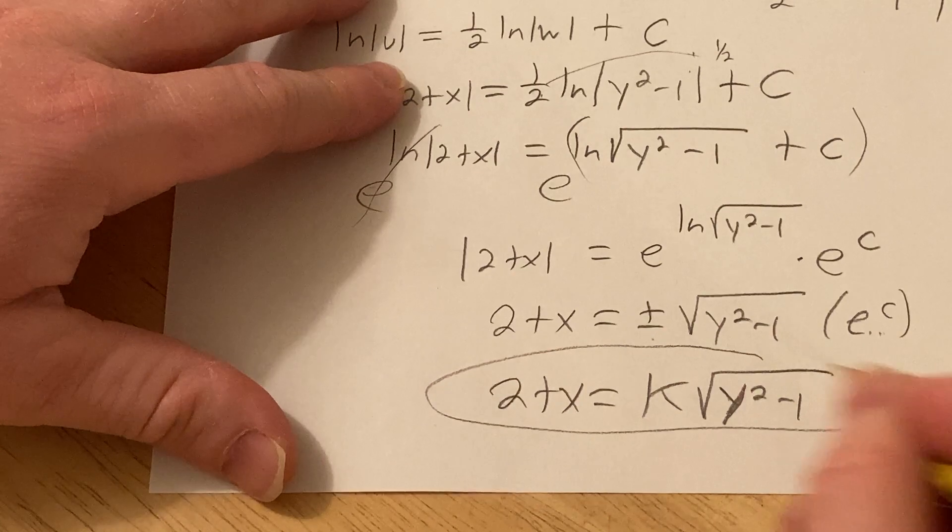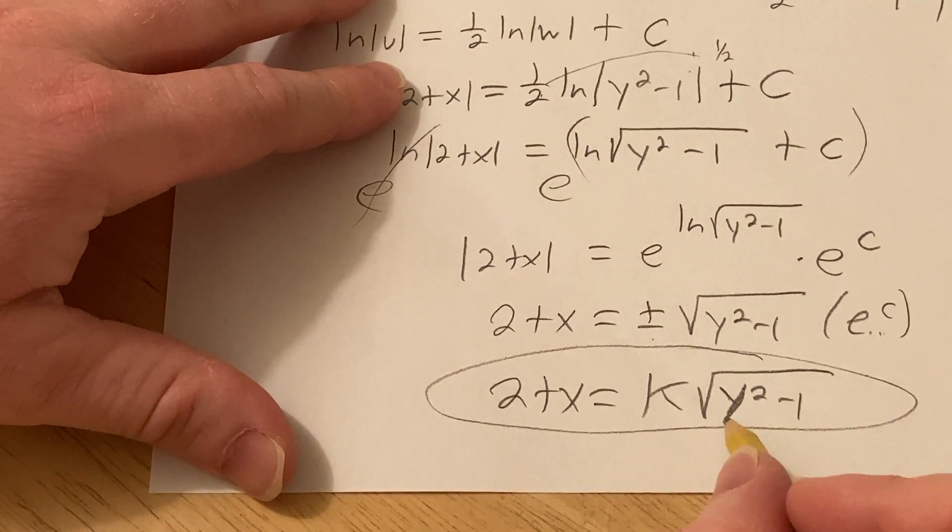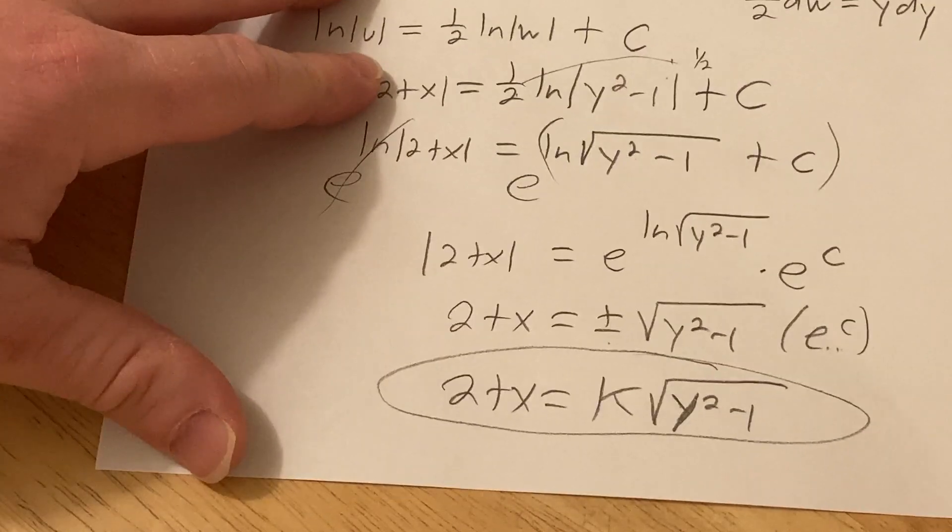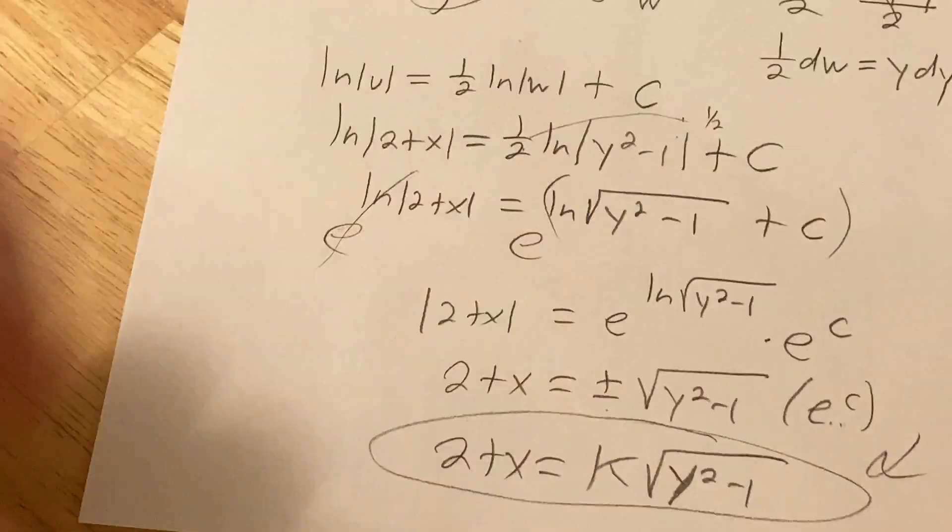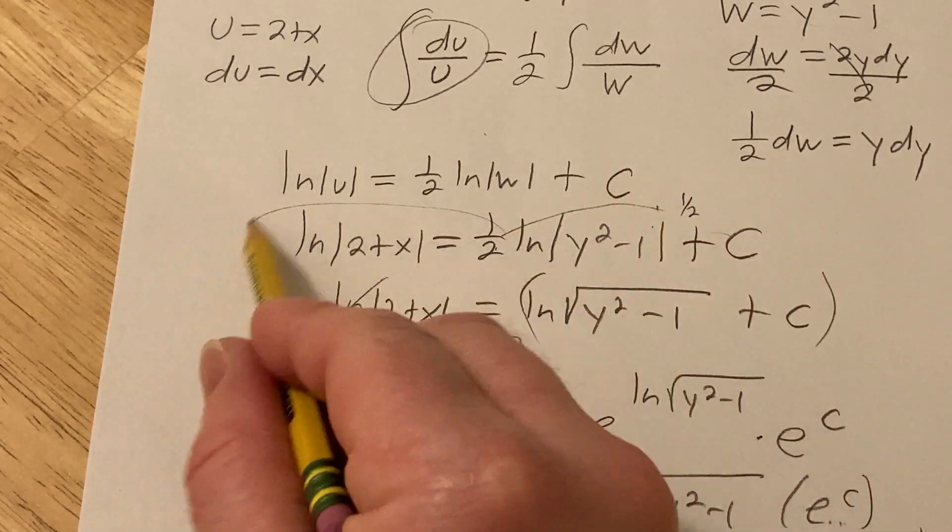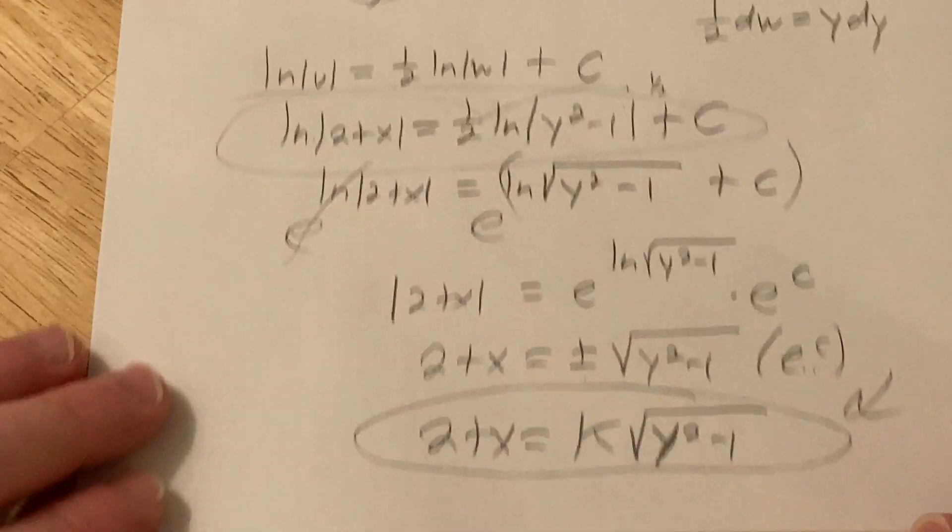So that's an acceptable answer. You could probably go further. You could divide by k, square both sides, and solve for y. But I'll just leave it there. I hope this video has been helpful. And again, you could have probably just stopped right here. I mean, this would have been good as well. Good luck.